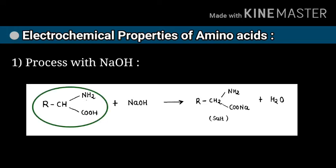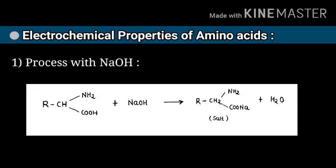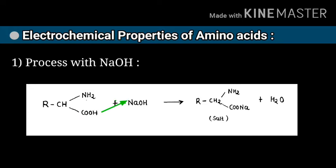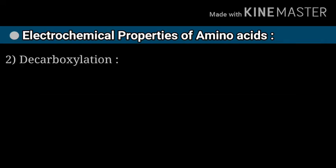See the reaction: amino acids react with NaOH and form its salt plus H2O. Here you apply one rule — the reaction occurs on the carboxyl group of amino acids. The reagent used here is OH (hydroxyl group), which is removed, and Na (sodium) takes its place to form the salt.